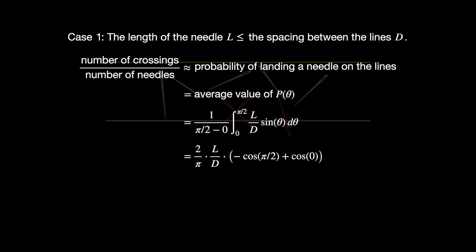L and D are just numbers. The antiderivative of sine of theta is negative cosine of theta, so this average value computation turns into 2L divided by pi times D times negative cosine of pi over 2 minus negative cosine of 0, or plus cosine of 0. Cosine of pi over 2 is 0, cosine of 0 is 1, therefore the sum of those two cosine expressions is just 1, which tells us that the probability of landing a needle on the lines works out to 2 times L divided by D times pi. Therefore, with enough needles, the ratio of the number of crossings to the number of needles should approximate this value.